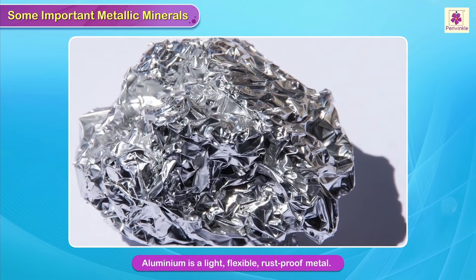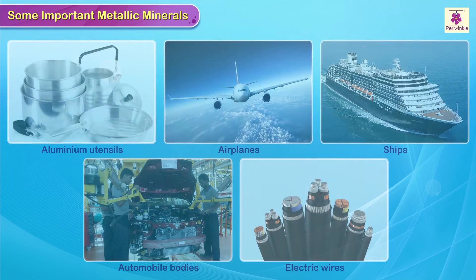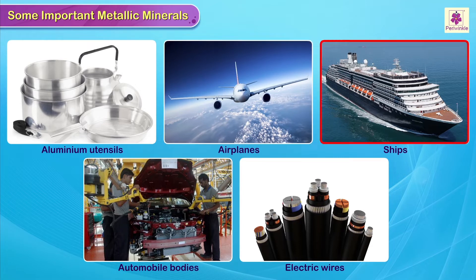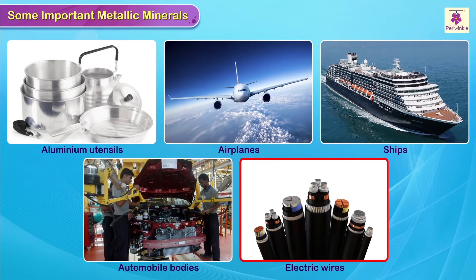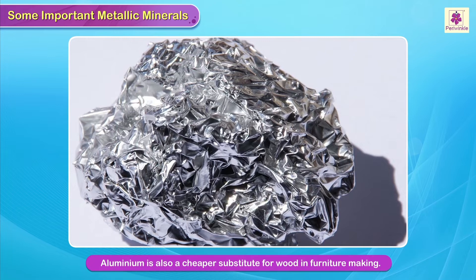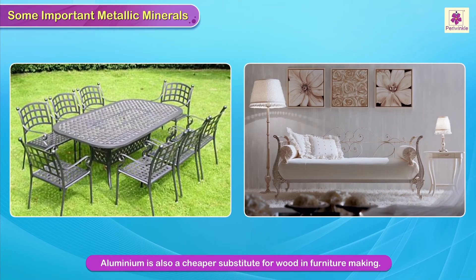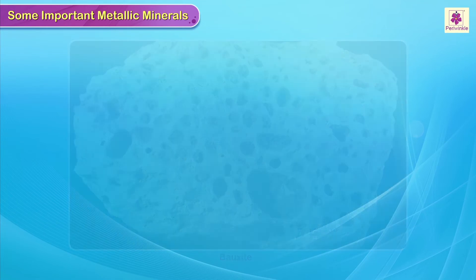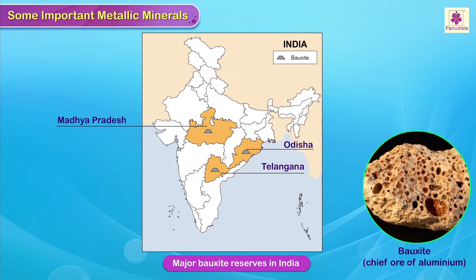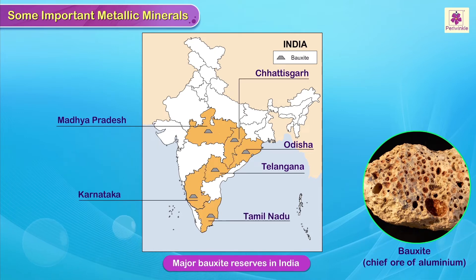Aluminium is a light, flexible, rust-proof metal. It is used in the manufacture of utensils, airplanes, ships, automobile bodies, electric wires, etc. Aluminium is also a cheaper substitute for wood in furniture making. Huge deposits of bauxite, the chief ore of aluminium, are found in Odisha, Madhya Pradesh, Telangana, Karnataka, Tamil Nadu, Chhattisgarh, Gujarat and Maharashtra.